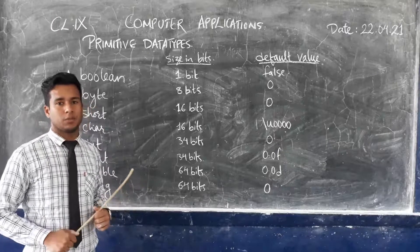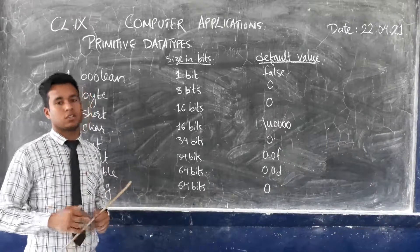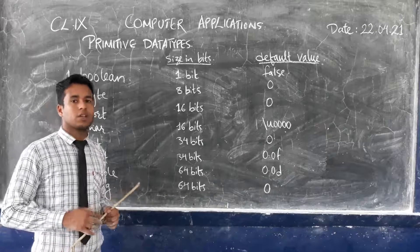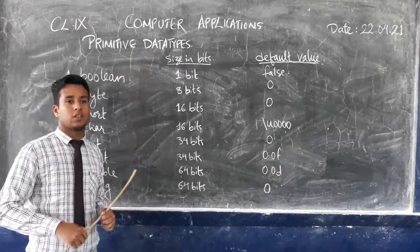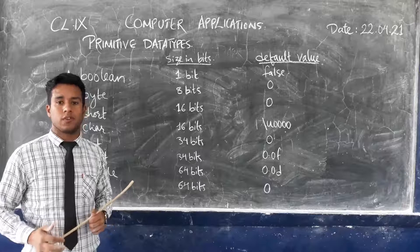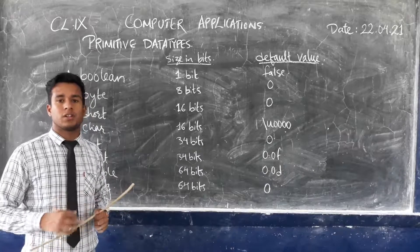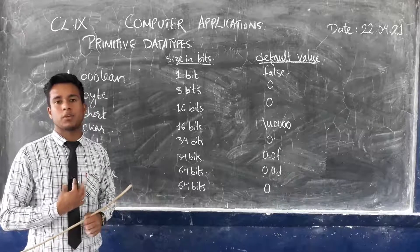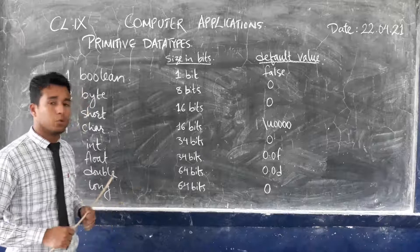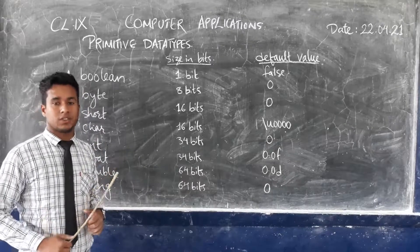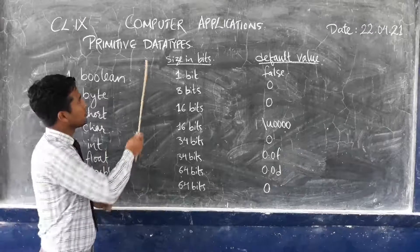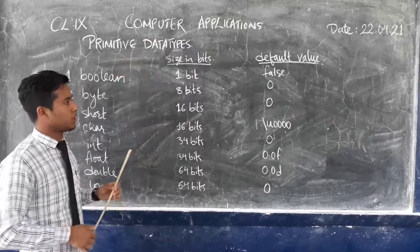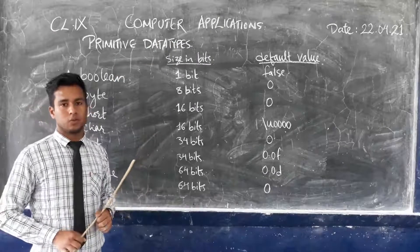There are two different types of data types in Java. One is called primitive and another one is called reference. The data types which are provided by Java are called primitive data types. The reference data types are data types which are created by the programmer or the user. In today's class we'll be learning mostly about the primitive data type, its size in bits, and its default values.